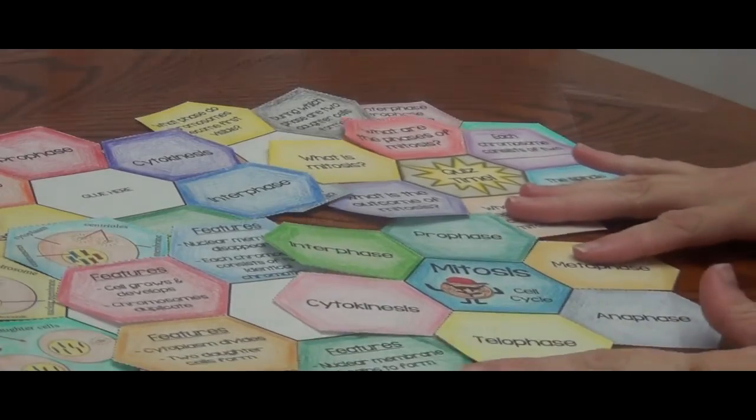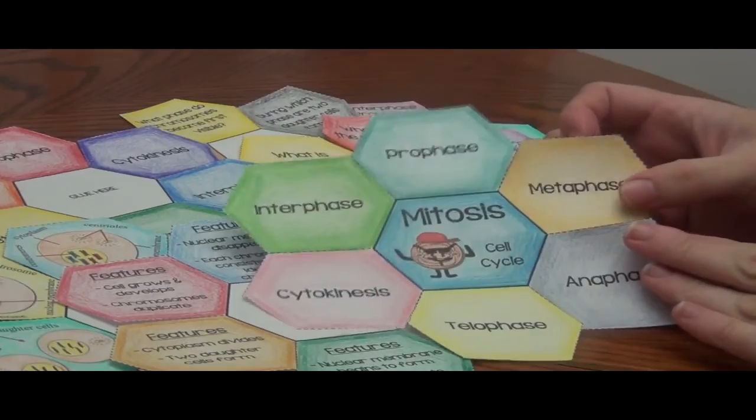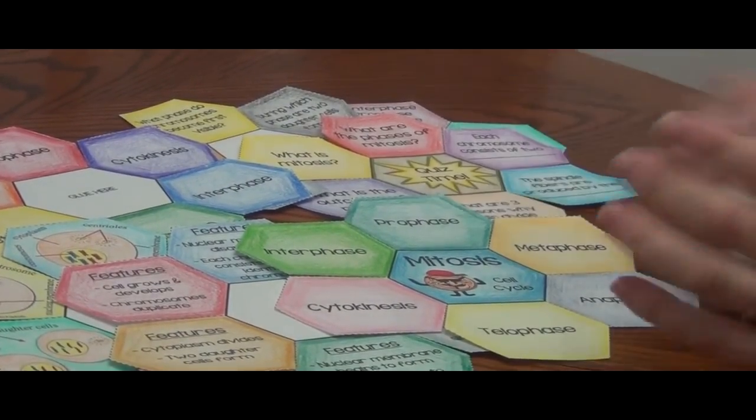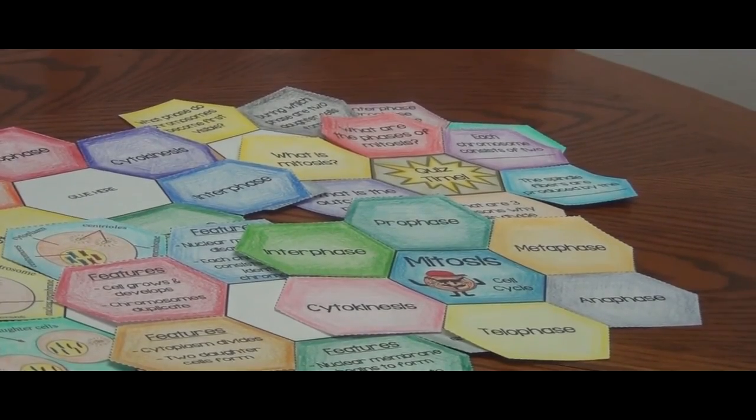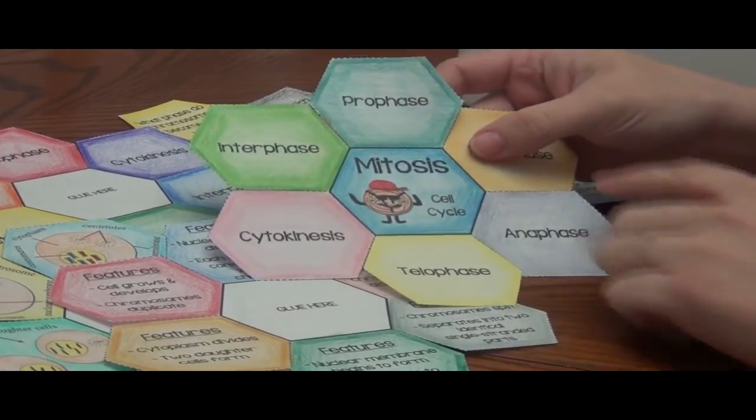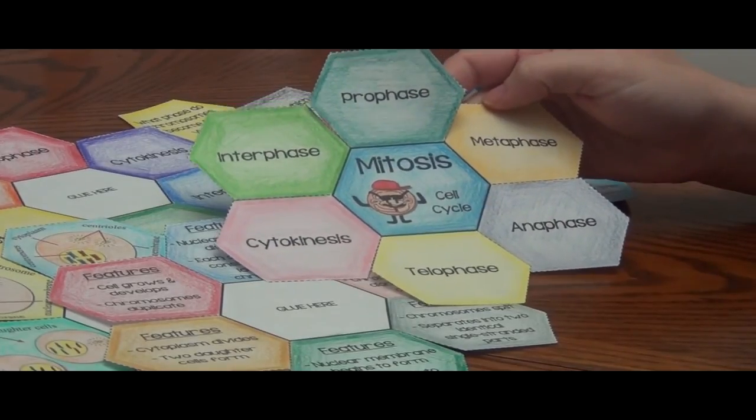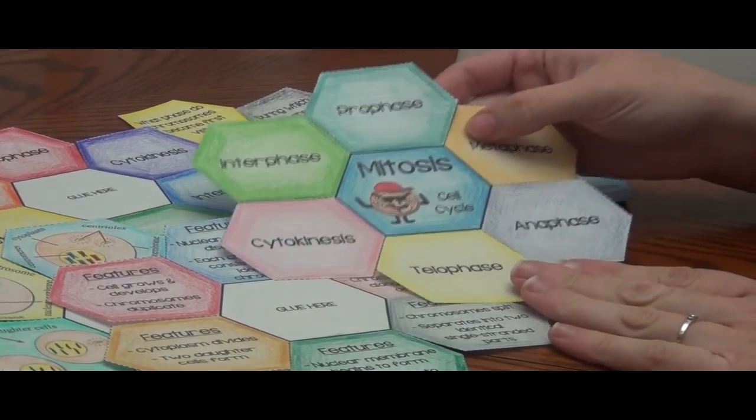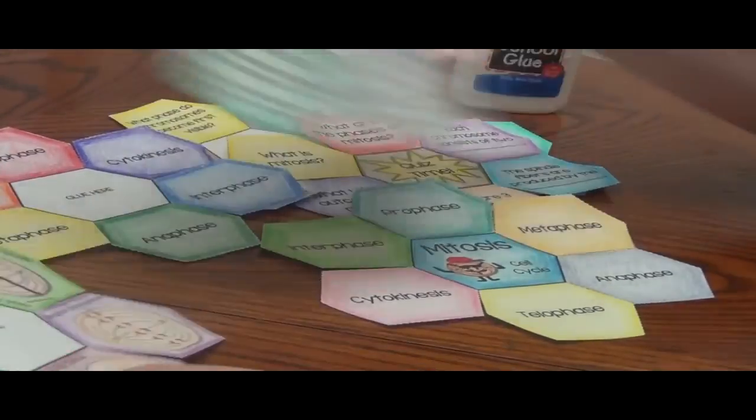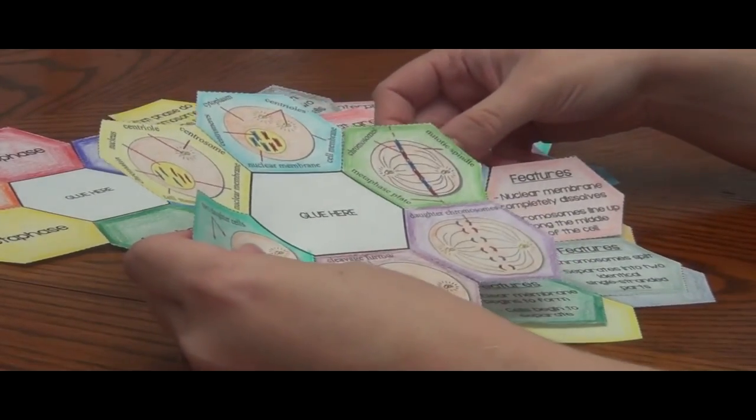So as you can see, I have finished coloring and cutting each piece that I am going to use. So all you need now is glue and I'm going to go ahead and construct the foldable. So the very first page I want is talking about mitosis, the cell cycle and it has the different phases. So I'm going to start with this one and I can decide if I want to put the features next or the actual diagram.